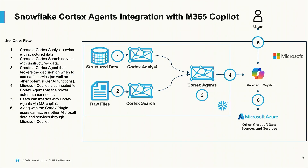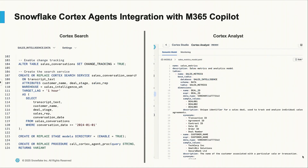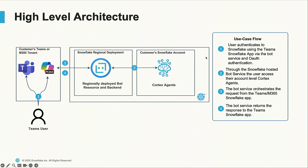You develop those two services, create an agent, and then you can manually connect Copilot to that agent. But we're rolling out a new integration where, as soon as you create this Cortex agent laid on top of Cortex Search and Cortex Analyst, and configure OAuth from a Microsoft tenant to Snowflake, there will be the ability to automatically use that Cortex agent from any Microsoft 365 Copilot experience — notably Teams. The only two things you have to do are create the agent inside of Snowflake and set up OAuth to securely connect. This is going to be generally available in limited regions come June — our big conference, Summit, is the first week of June in San Francisco, so look for announcements around that time.